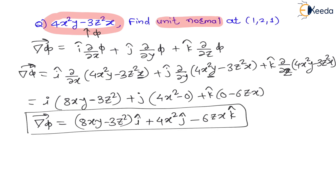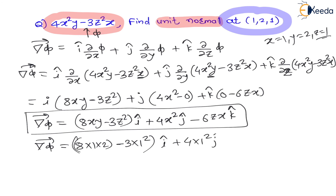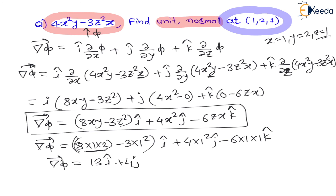Now let us substitute the given point x=1, y=2, z=1 into the gradient. The i-component: 8(1)(2) − 3(1)² = 16 − 3 = 13. The j-component: 4(1)² = 4. The k-component: −6(1)(1) = −6. Therefore the gradient of φ at the point (1, 2, 1) is: ∇φ = 13i + 4j − 6k. This gradient vector is the normal to the surface.